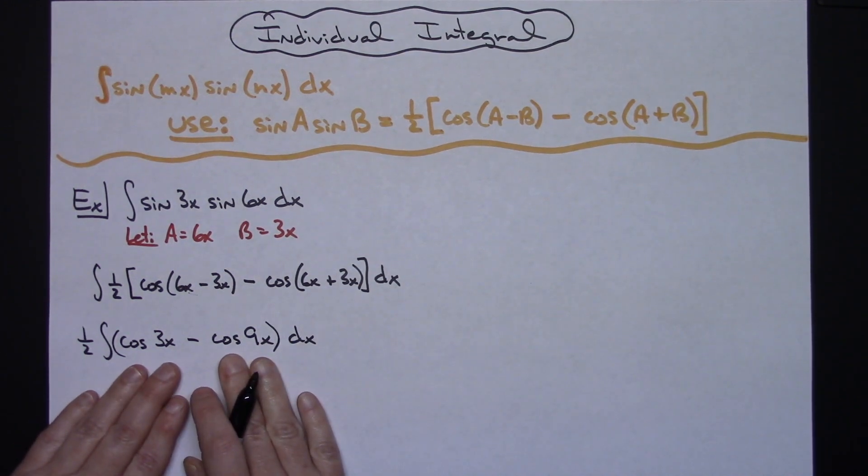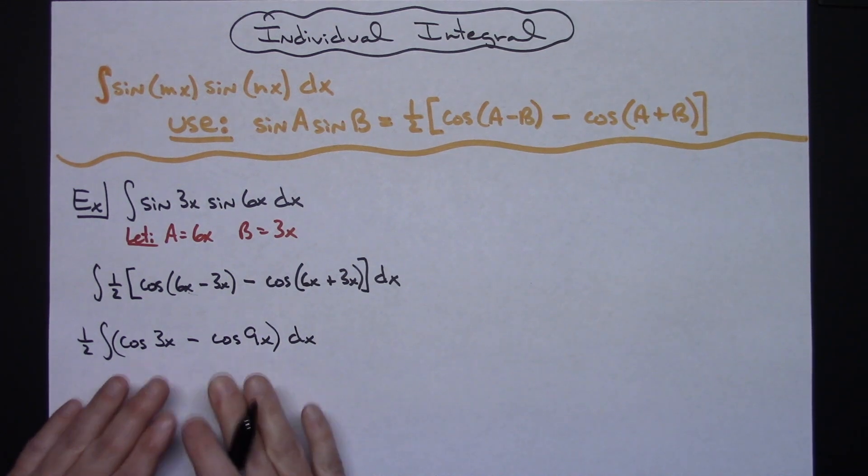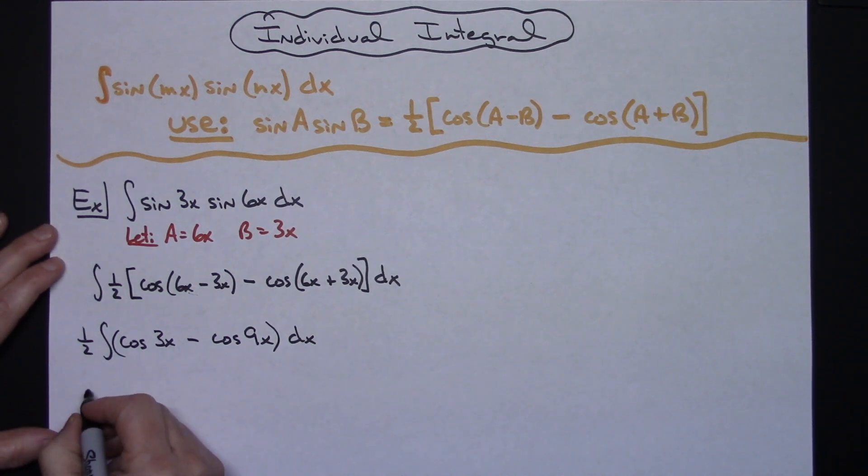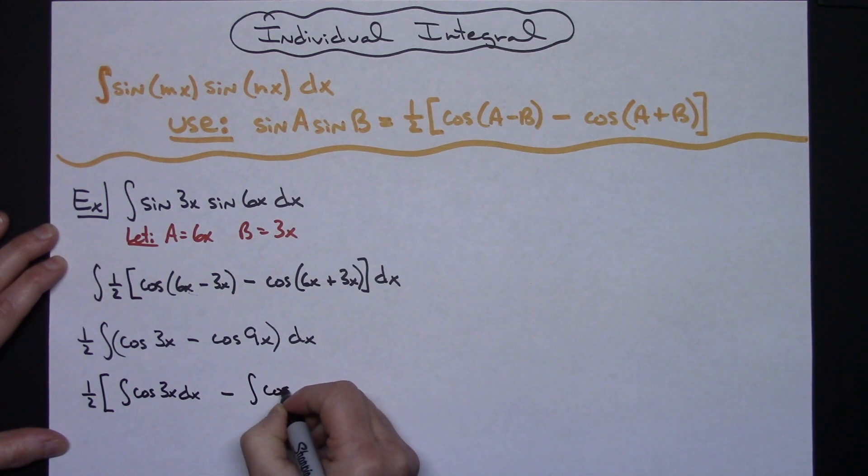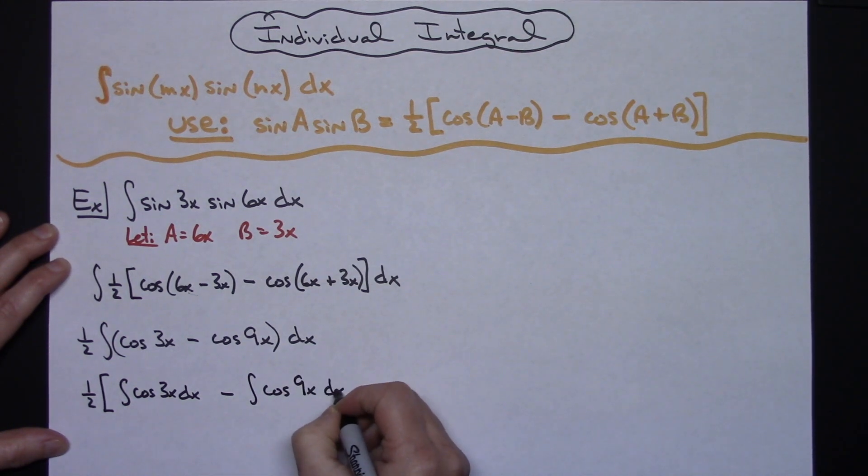Now at this point I'm subtracting two individual integrals, so I can integrate them each separately. So I think I'm actually going to show that step here. We'll have a one half times the quantity of the integral of cosine 3x dx minus the integral of cosine 9x dx.